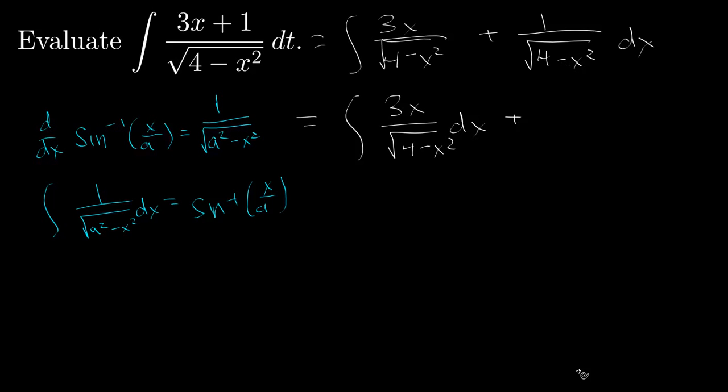And as we can see, we apply this rule here. a is equal to 2 since we have 4, that's got to be a squared, so a equals 2. So this is, on the right side, the inverse sine, or arc sine, of x over 2.